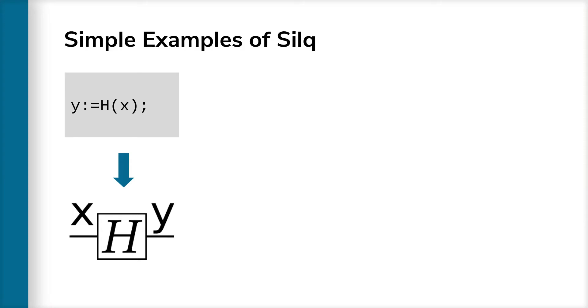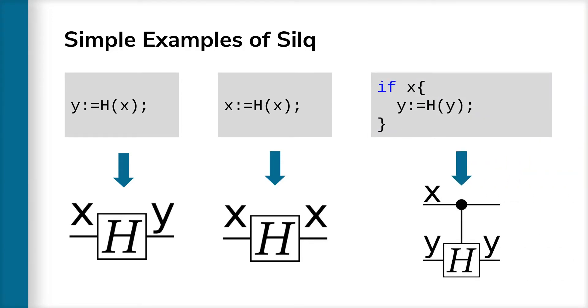Often, it is convenient to think of this operation as applying the Hadamard operation to x, as in this example, which reassigns the output of h to x. Finally, this last example applies the Hadamard operation h conditionally on x, which should be intuitive for programmers, but is often not written this way in existing quantum languages.